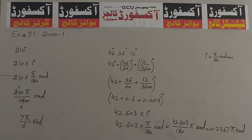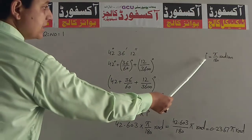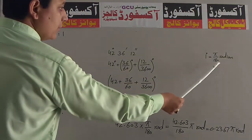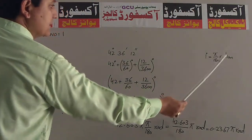Convert the following to Radian. Degree में question दिया गया है और कहता है कि आप इसको Radian में change करें. अब degree को Radian में change करने का formula है: 1 degree is equal to Pi over 180 Radian.